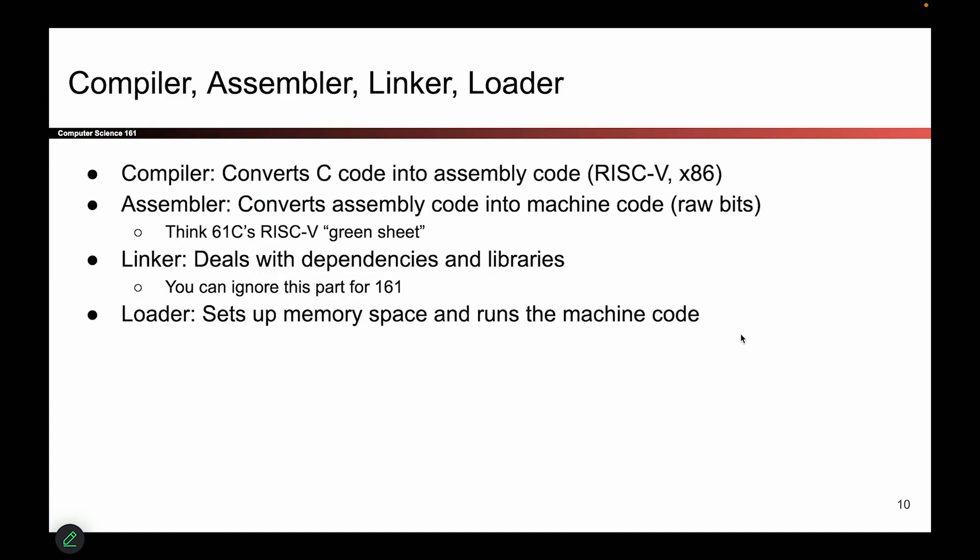Maybe something you've seen in CS61C. The compiler translates C to assembly. The assembler then converts the assembly code into raw bits. There is something called a linker that you might have seen in a previous class that deals with dependencies. In this class, we're not going to worry about it.